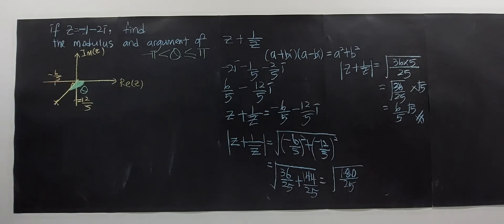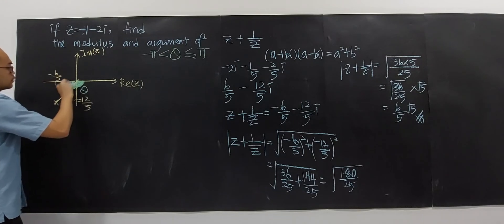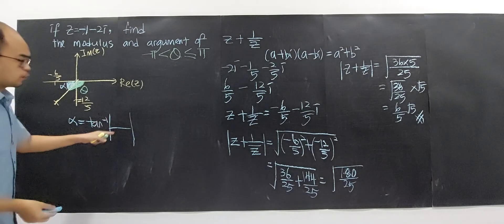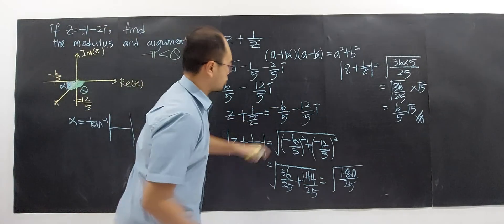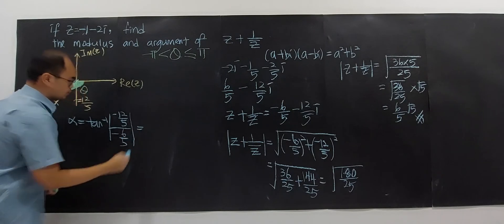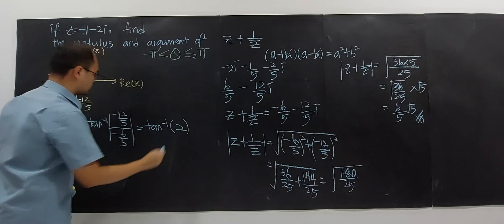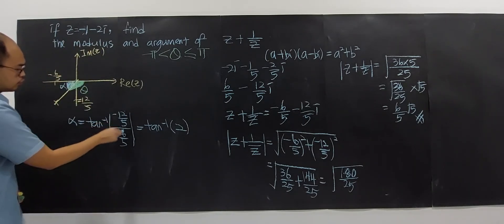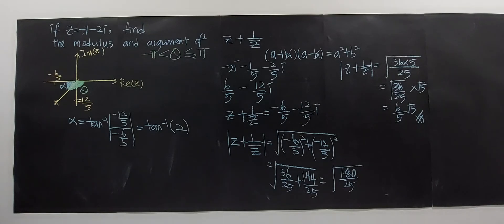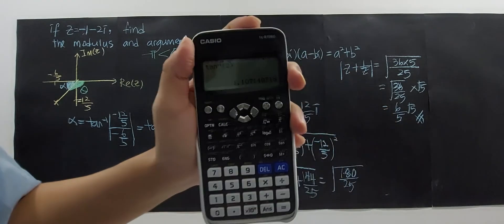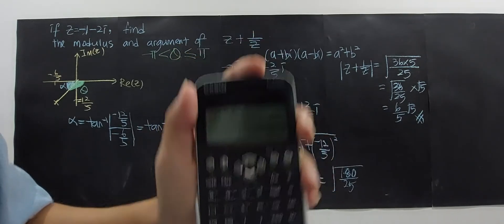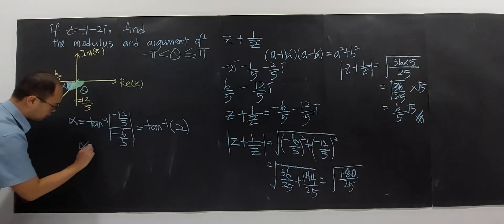The formula for alpha is always arctan of the modulus of b over a — we use modulus to ensure it's positive. For this case: arctan of the modulus of negative 12 over 5, divided by negative 6 over 5, which simplifies to arctan of 2. Using a calculator, alpha equals 1.107 radians.